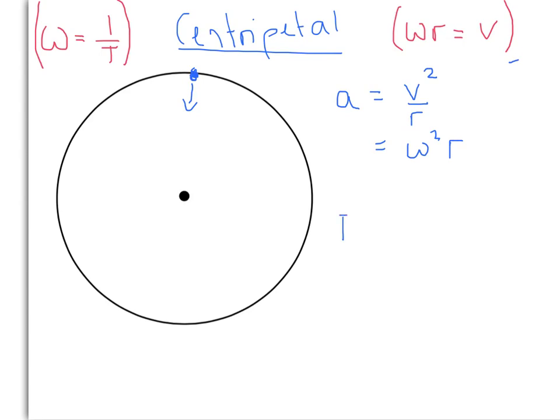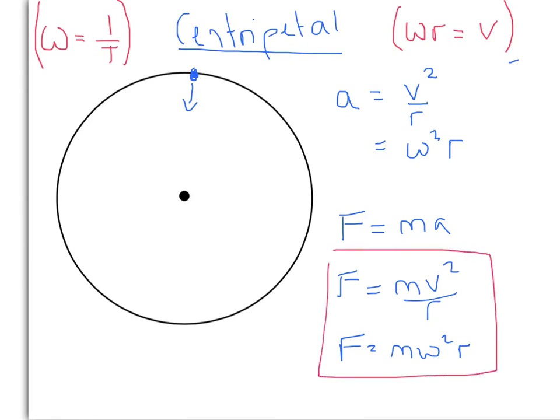If we want to work out centripetal force, force is mass times acceleration. So we've got two equations for that too. We've got mv squared over r or f equals m omega squared r. So these are your two equations that are going to be relevant to the satellites and their motion. If you want some more detail on these, I'm going to make another video later on about where these equations come from.